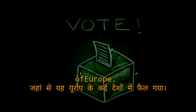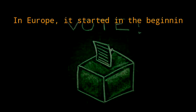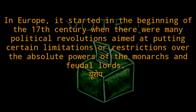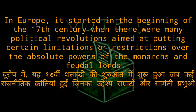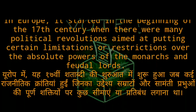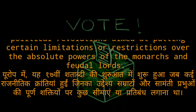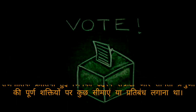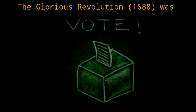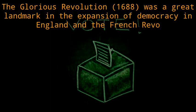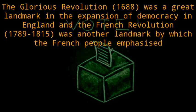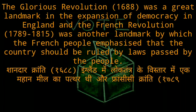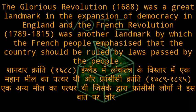From Athens, democracy spread to many countries of Europe. In Europe, it started in the beginning of the 17th century when there were many political revolutions aimed at putting certain limitations or restrictions over the absolute powers of the monarchs and feudal lords.